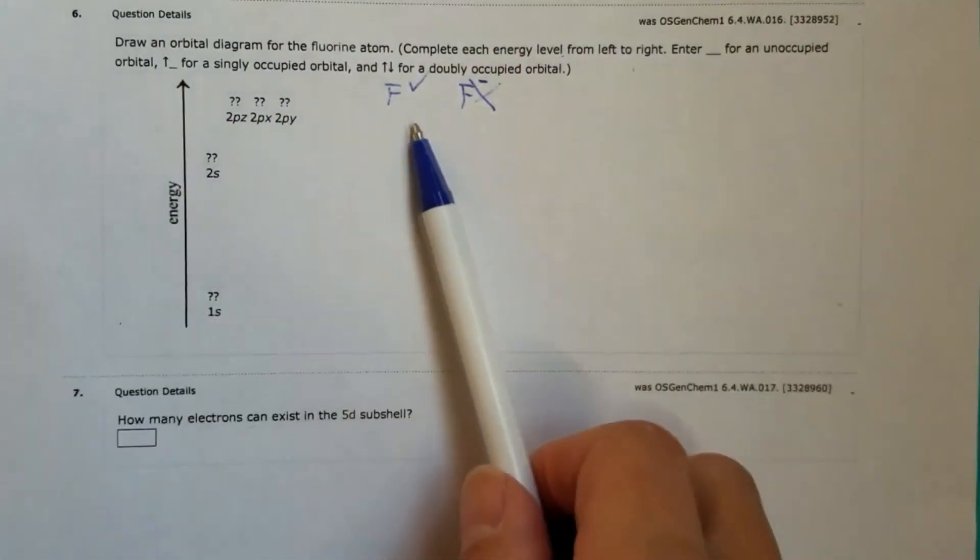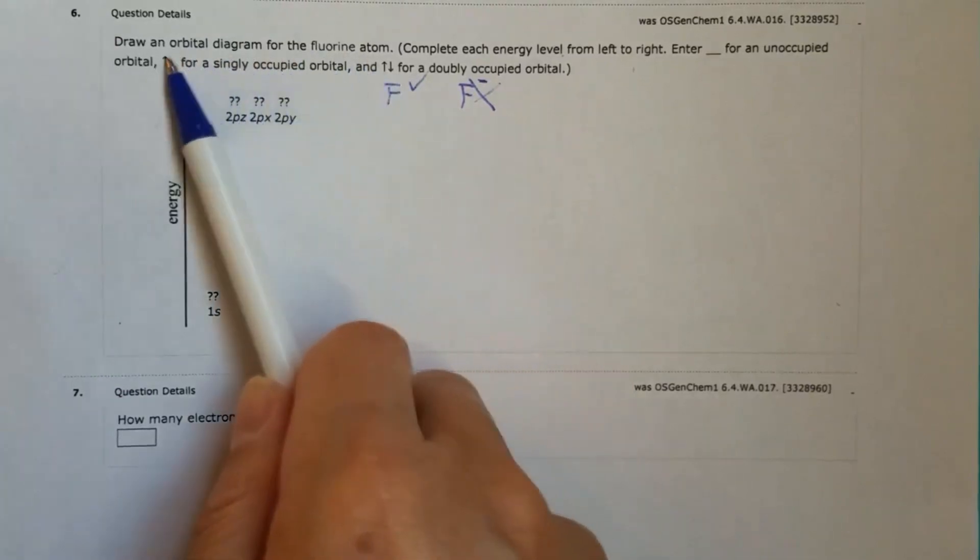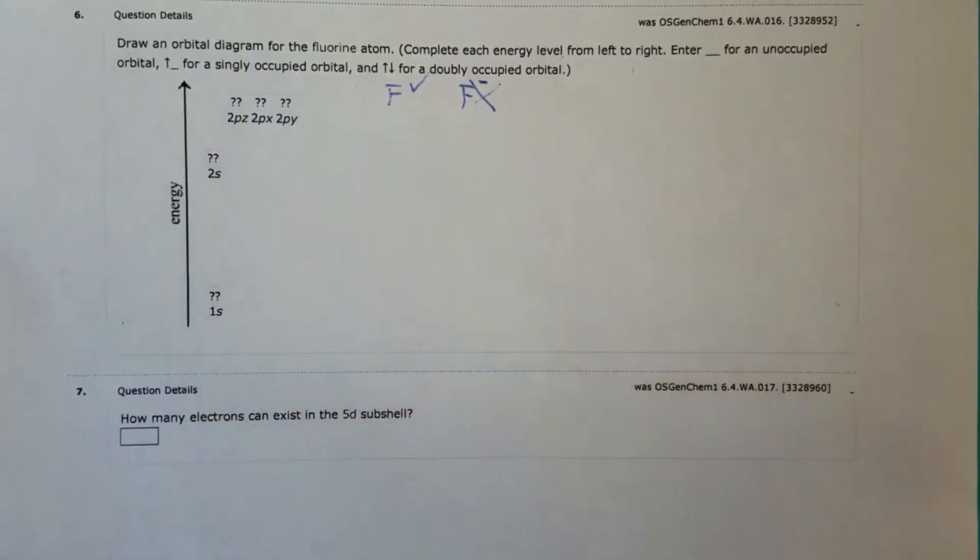If it's just a neutral atom, we just need to find out the atomic number of fluorine, which equals the number of protons, then we would know the number of electrons. All right, so we'll need the number of electrons in order to draw an orbital diagram or to write down the electronic configuration. That's basically the same thing. We need to know the total number of electrons.